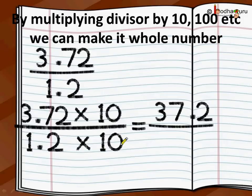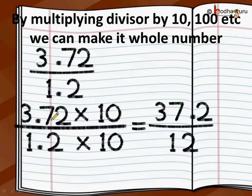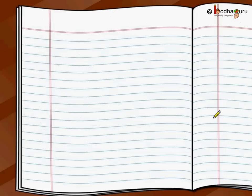We chose 10 because by multiplying 1.2 by 10 it becomes 12 — the decimal point moves one place to the right. So now the divisor has no decimal point. The dividend also changes: 3.72 multiplied by 10 moves the decimal point to the right, so it becomes 37.2. Now we have to divide 37.2 divided by 12, which is a simpler problem.